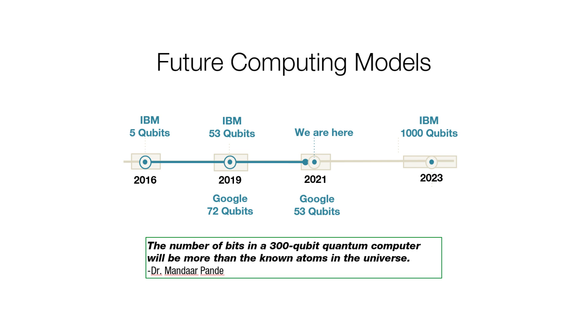If you look at the future and how it's going to evolve, there's a quote: the number of bits in a 300-qubit quantum computer will be more than the number of atoms in the universe. If you see what happened around 2016, IBM started with five qubits, then 53 qubits in 2019. Google tried 72 and came back to 53 qubits. And now IBM is going to try 1,000 qubits. Just imagine — 300 qubits can simulate more than all atoms in the universe; with 1,000 qubits, we can pretty much simulate multiple universes.